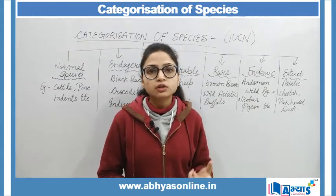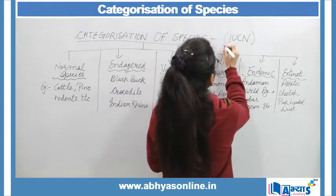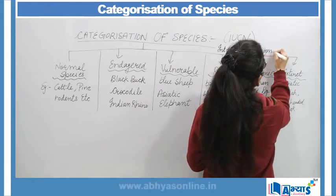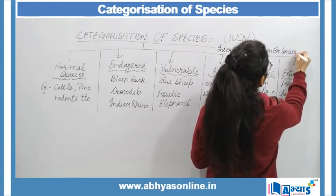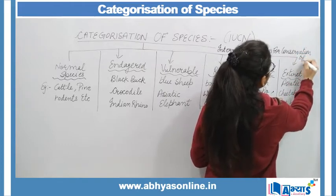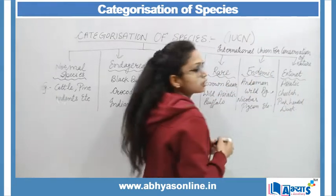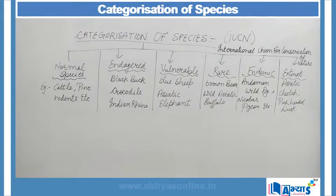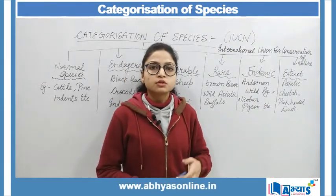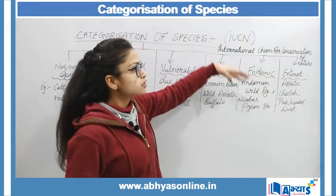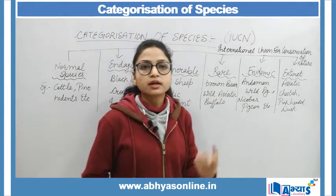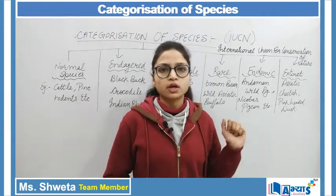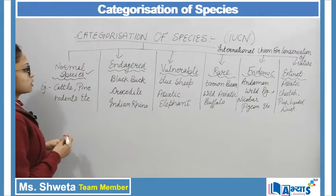IUCN stands for International Union for Conservation of Nature. This organization has categorized species so that they can find the existence of the numbers — how many are endangered and how many are already finished. So the first category is the Normal Species.